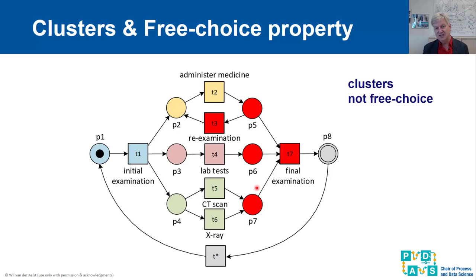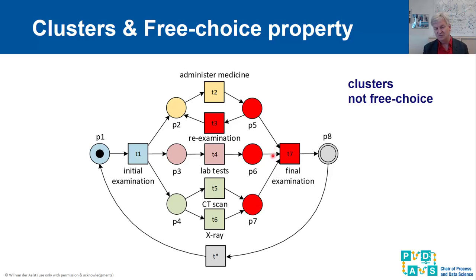This Petri net is not free choice. The free choice property means that if a place has two output transitions, those transitions should have exactly the same set of input places. In this example, P5 has two output transitions T3 and T7, but these do not have the same input set — T3 has input set {P5}, while T7 has input set {P5, P6, P7}. So this is not free choice.